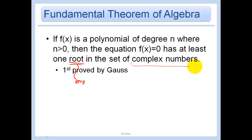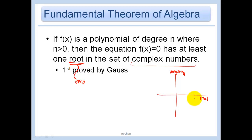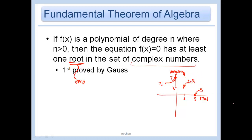Don't let the set of complex numbers scare you. The complex plane has the real numbers on one axis and the imaginaries on the other. So five would be a real number, 7i would be purely imaginary, and 2 plus 3i would be a complex number with a real part and an imaginary part. This theorem was first proven by Gauss.